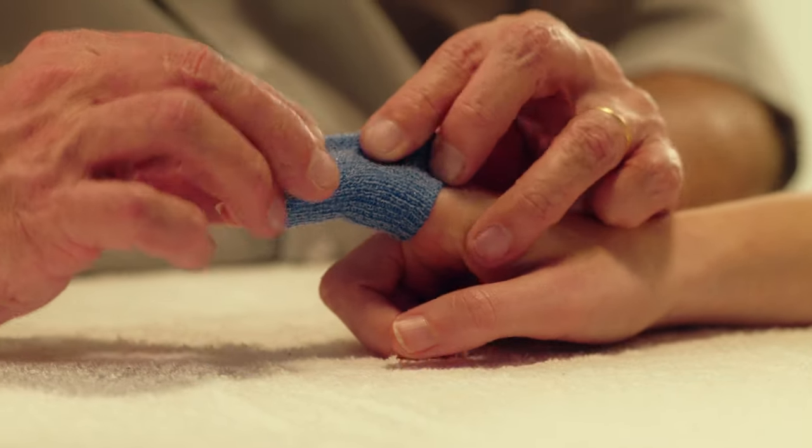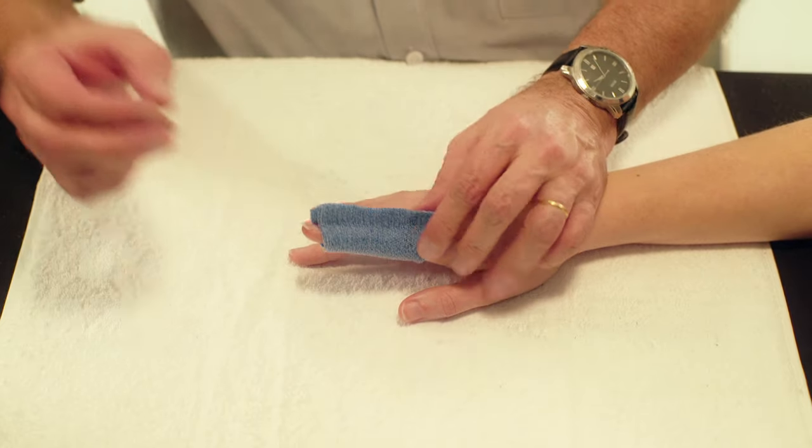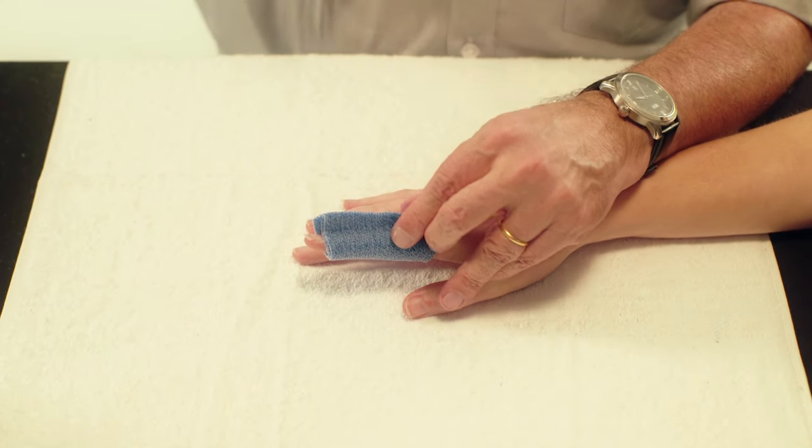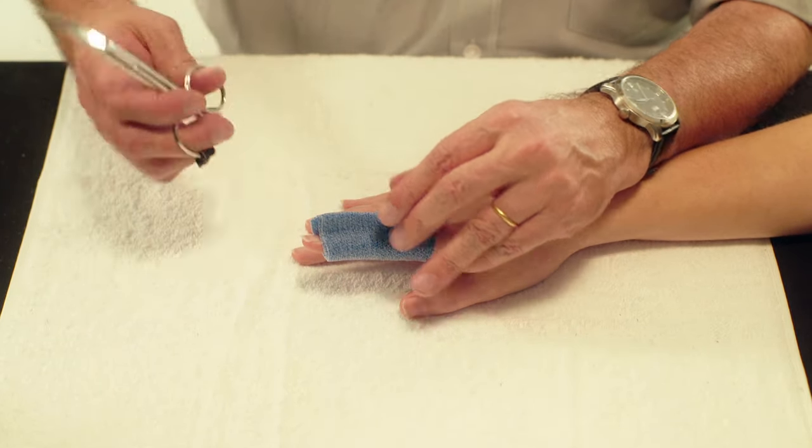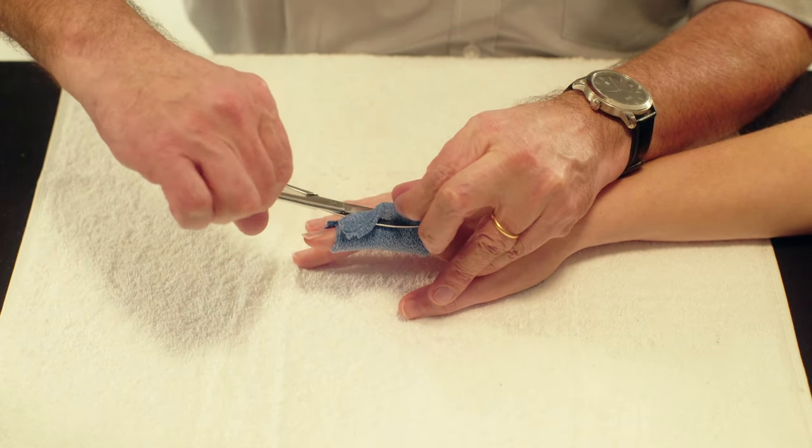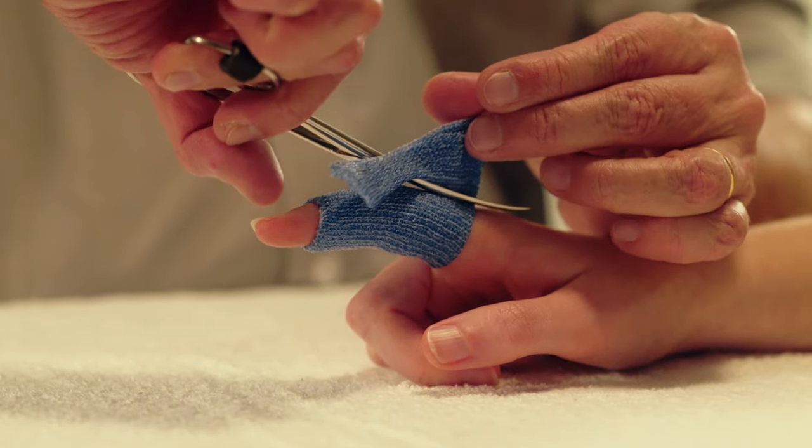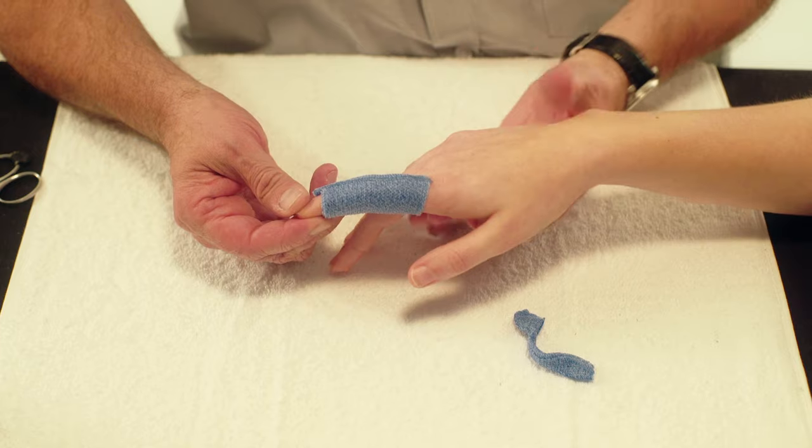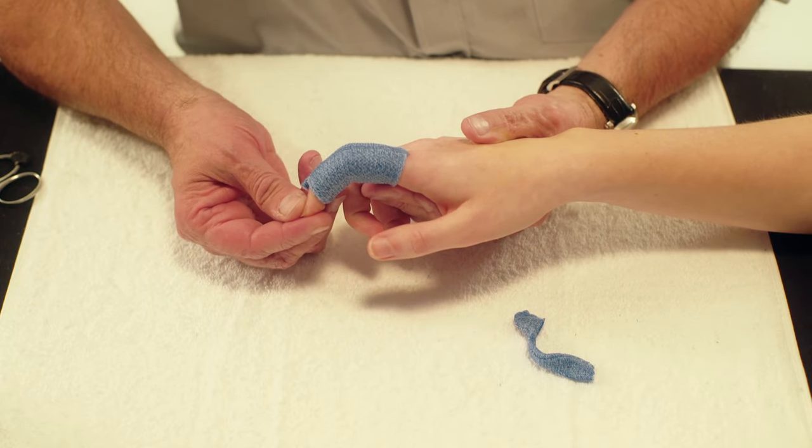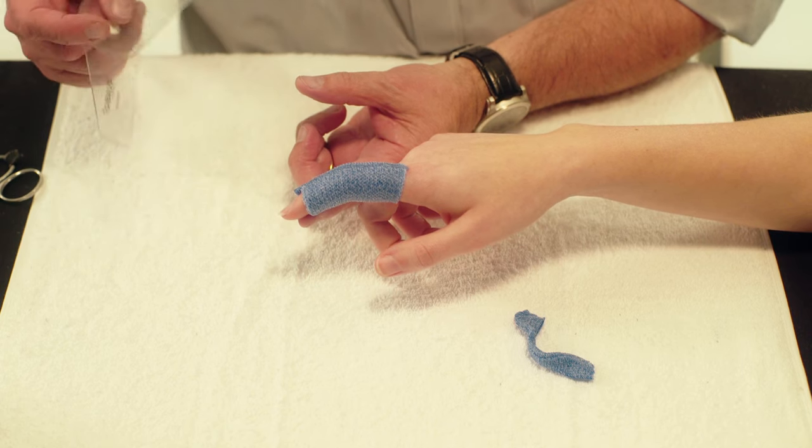Make sure to cover the entire length of the proximal and middle phalanges to the DIP joint of the finger. Cut away any excess material. Maintain the finger in 30 degrees flexion. This can be controlled with a small finger goniometer.